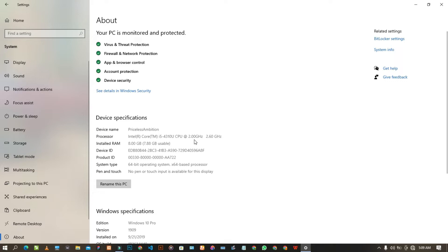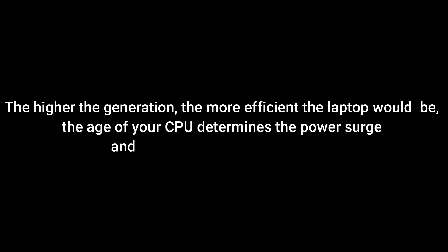The second thing to watch out for when buying a system is the age of the CPU — that's the generation of the laptop. We have different generations: first, second, third, fourth generation, and Intel is now on the 10th generation. The higher the generation, the more efficient the laptop will be. The age of your CPU determines the power usage and the generation of the system.